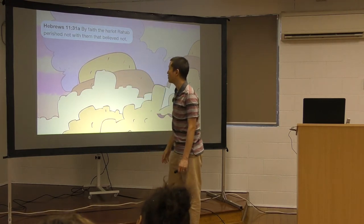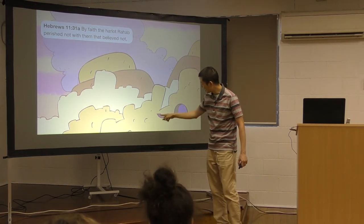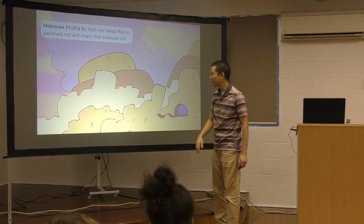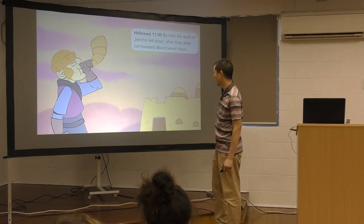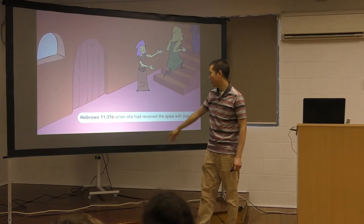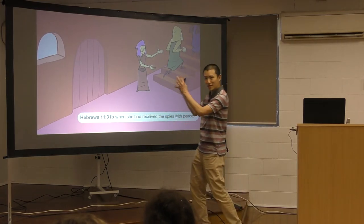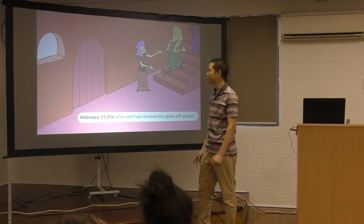By faith the harlot Rahab perished not with them that believed. So Rahab was the one that put the scarlet thread out the window. So when they came into the walls of Jericho fell down, but Rahab was saved. Rahab didn't die. Why? When she had received the spies with peace. Because when the Israelite spies came in, she protected them. She didn't get them in trouble.